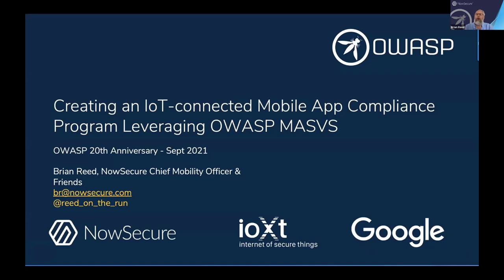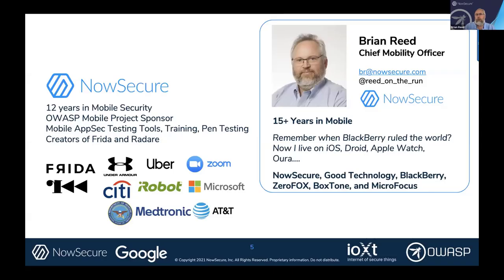I want to talk about how an organization and a community can take the 20 years of history of OWASP — the maturing processes and documentation — and use it to create new compliance regimes. About a year to a year and a half ago, a group got started saying we need something for mobile-connected IoT and VPN. I want to share that story today, as it's a perspective ideal for the legacy of what OWASP has created.